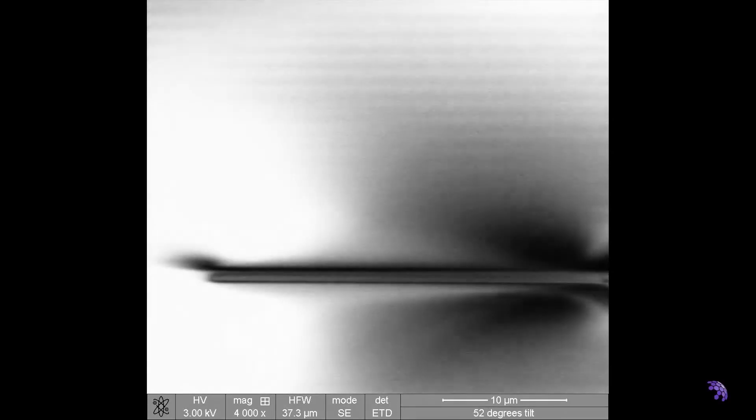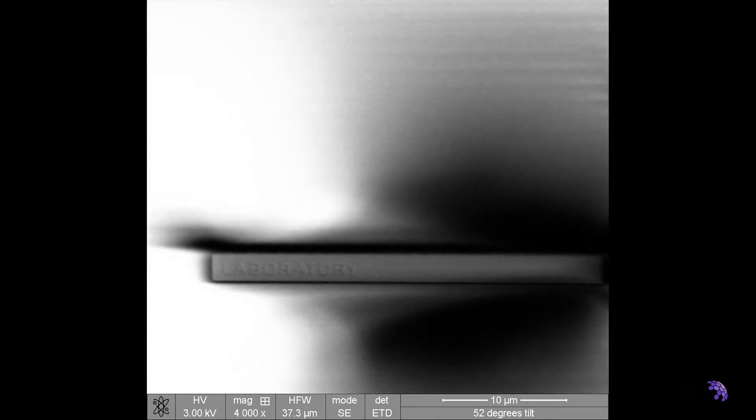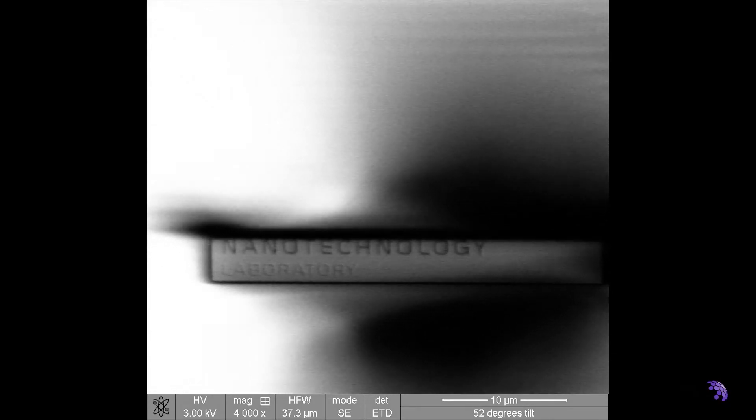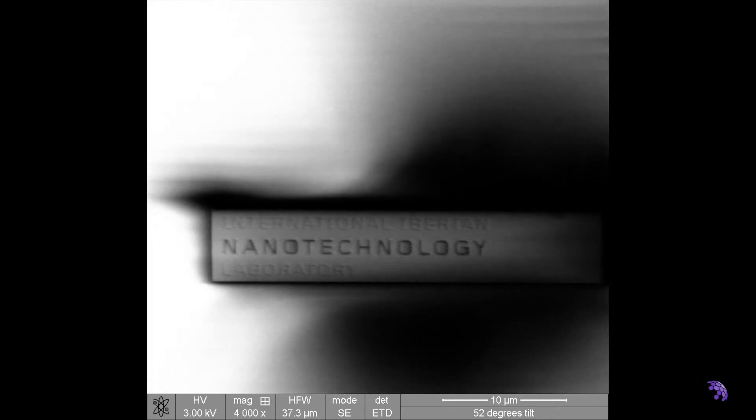After the quality of the metal layers has been confirmed, they are patterned into nanodevices. Even the sharpest knife would be too large for slicing open a nanodevice to look inside. So instead, a beam of ions is used.